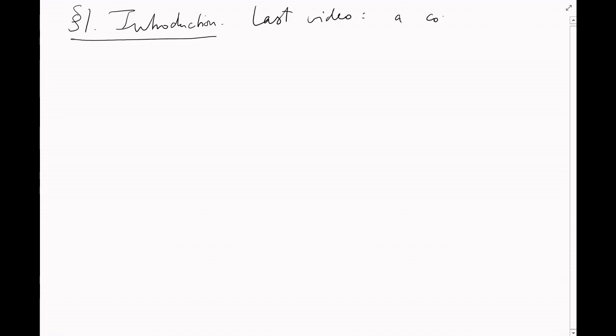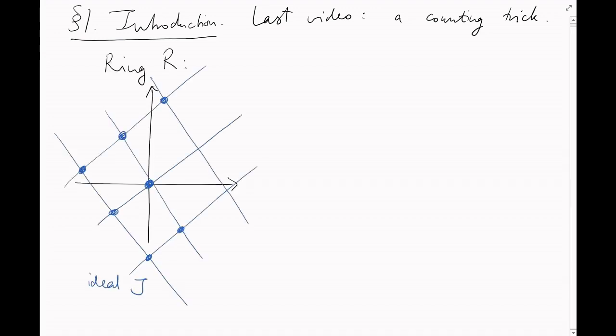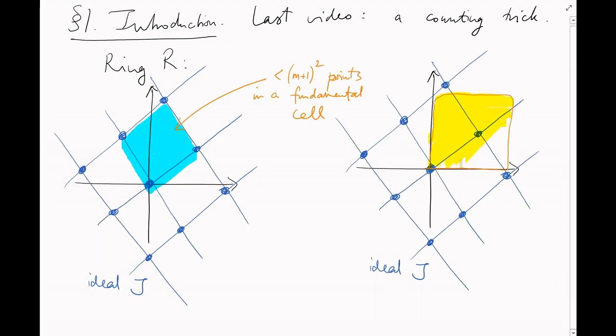Last video, we used a purely counting-based trick to find an element inside an ideal j of relatively small norm. The ideal j formed a lattice inside our ring, and we picked a large square of elements inside the ring, and we argued this square has more elements than any fundamental cell of j. That means it's so big relative to j that it must contain two elements that differ by an element of j. This is the pigeonhole principle. So we picked an element of j, and the size of that element was bounded by the size of the square.